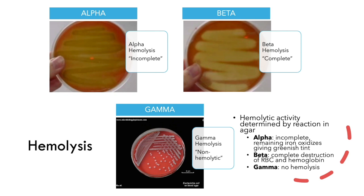Remember that alpha hemolytic bacteria in the Lancefield system are called group B streps, and in clinical settings, beta hemolytic bacteria are called group A streps.